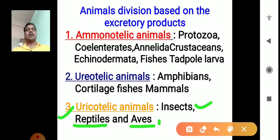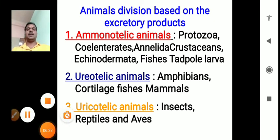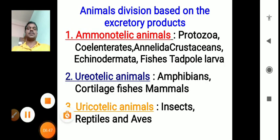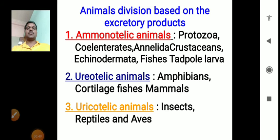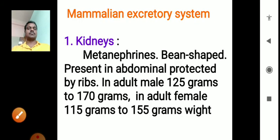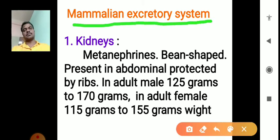These three types — ammonotelic, ureotelic, and uricotelic — divide animals into three groups based on their nitrogen-based excretory products. Next, we will discuss the mammalian excretory system.